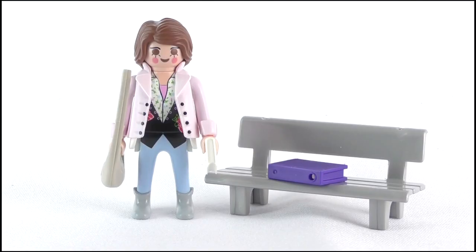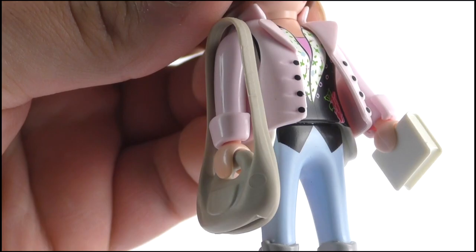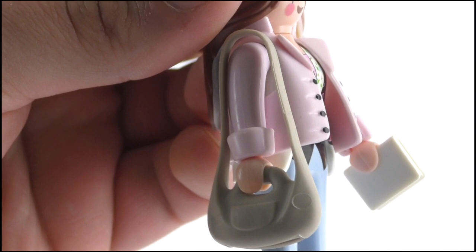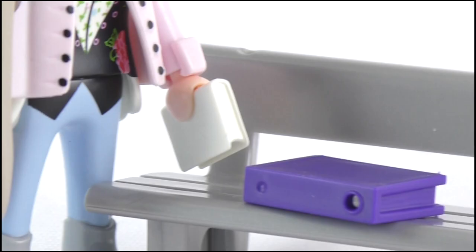And talking of Jennifer, we get a figure of her as well, wearing her outfit from the beginning of the movie. She comes with her bag, which doesn't go over her shoulder, and instead clips into her hand to emulate that effect. And as well as this, she comes with a book and a folder.